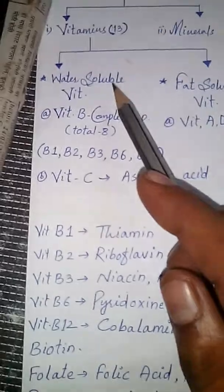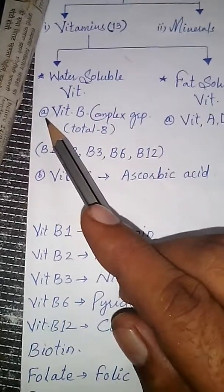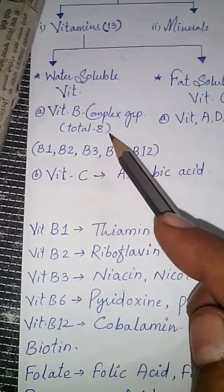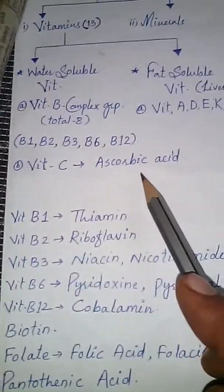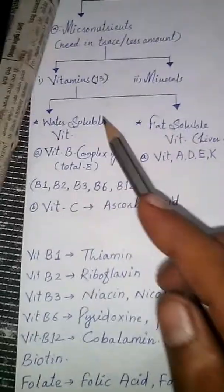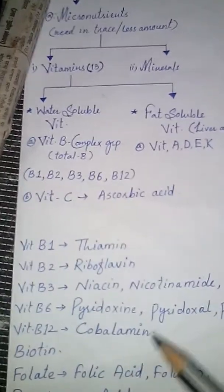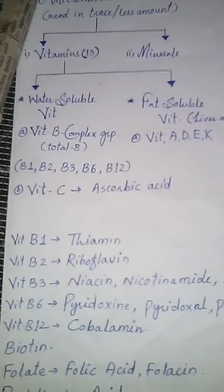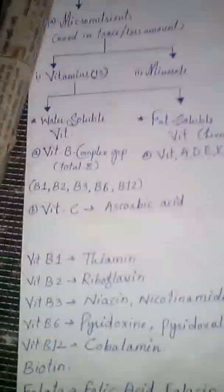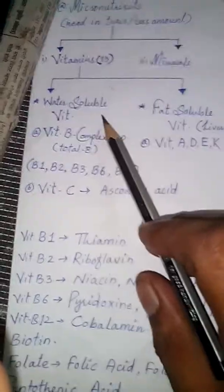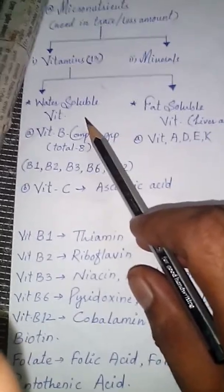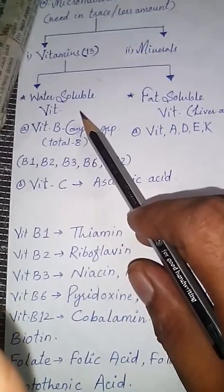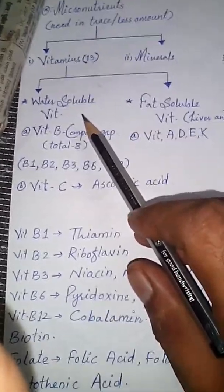These are the first type of water soluble vitamins — the vitamin B complex group, totaling eight. The second is vitamin C, also known as ascorbic acid or ascorbate. These water soluble vitamins are needed in traces or in a less amount, they are not stored in our body, and are released from different body fluids, so we need to obtain them from our diet.